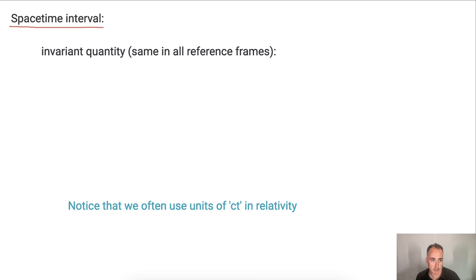That's going to be the invariant quantity, this spacetime interval. We have an equation for it, and it goes like this: delta S squared equals c delta T squared minus delta X squared.